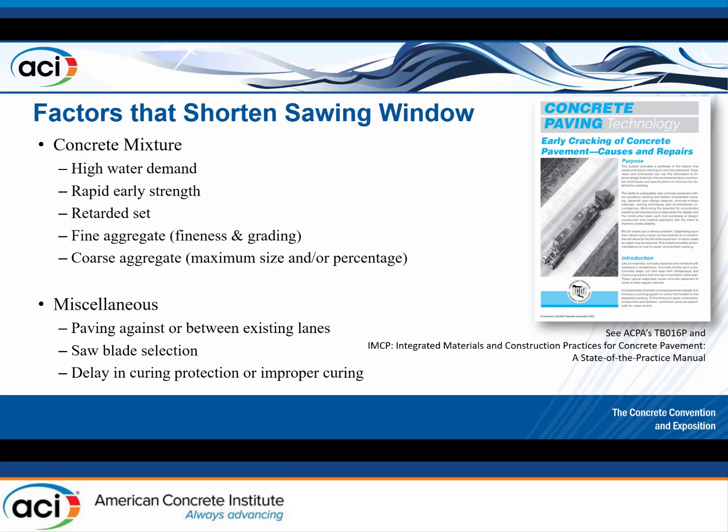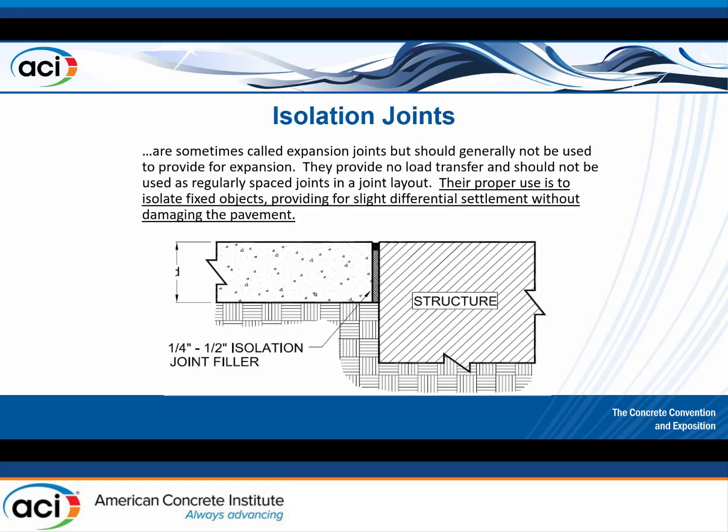Other factors affecting the sawing window include concrete mixture variables such as water demand and aggregates, existing adjacent lanes, and saw blade selection.